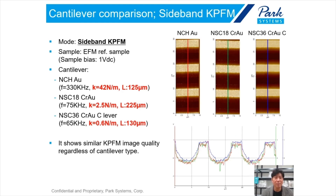Next, using the same measurement, same sample, and same cantilevers but measured by sideband KPFM, there is almost no difference between cantilever types — just quite similar images. The results show similar KPFM image quality across all three cantilever types, and this is good evidence supporting the strength of sideband KPFM. The sensitivity of sideband KPFM is only affected by tip effects, not the entire cantilever, so the image quality is almost similar for all three cantilever types.